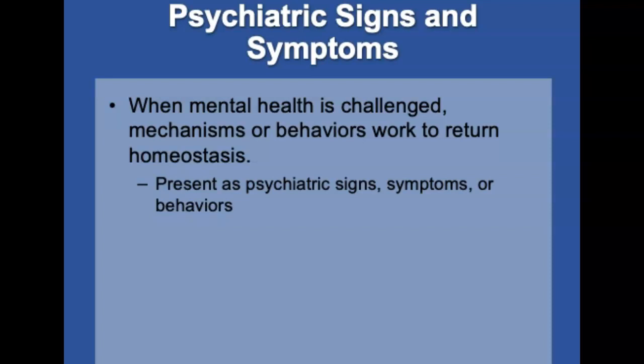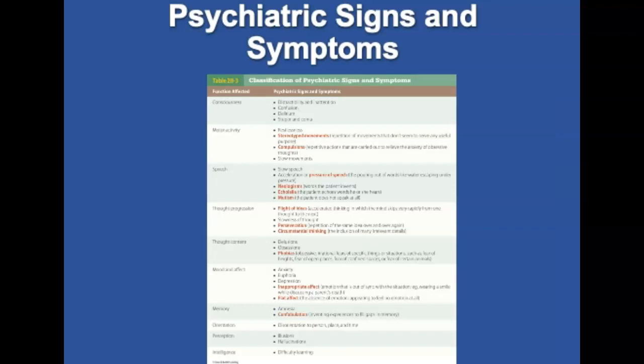Psychiatric signs and symptoms can be grouped according to the systems affected. Psychological functions include consciousness, motor activity, speech, thought, the outward expression of inner feelings, memory, orientation, and perception. Psychiatric signs and symptoms include these areas as well as changes in thought progression, thought content, mood, or intelligence.